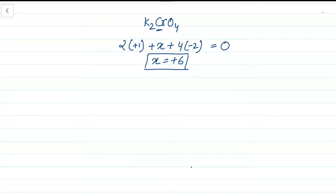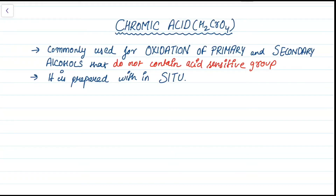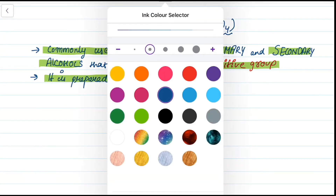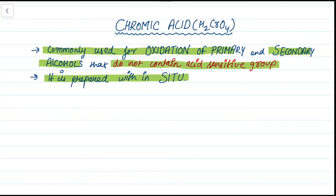Our first reagent is chromic acid (H2CrO4), commonly used for oxidation of primary and secondary alcohols. One thing to keep in mind: the molecule to be oxidized should not contain any acid-sensitive groups, such as an alkyne moiety, because being an acid it can attack there and give side products. Also, chromic acid is prepared in situ — it is not a bottled reagent and must be produced within the reaction mixture.